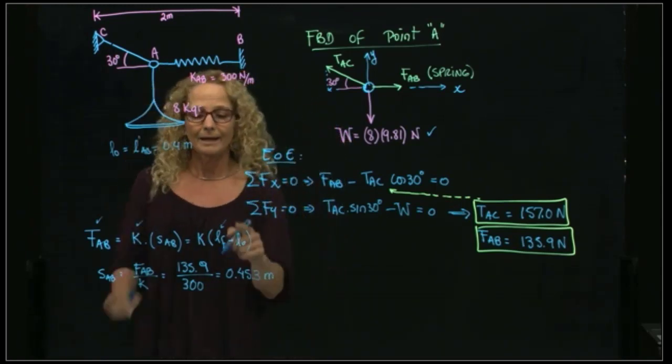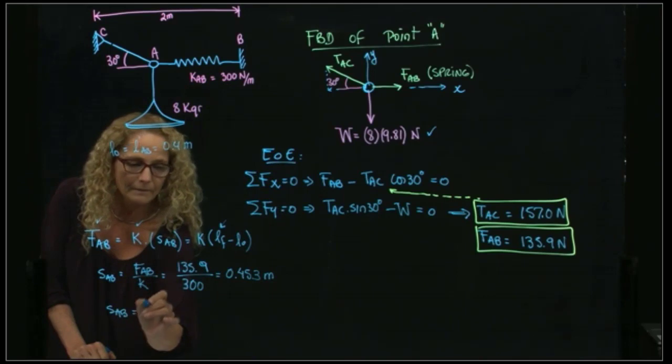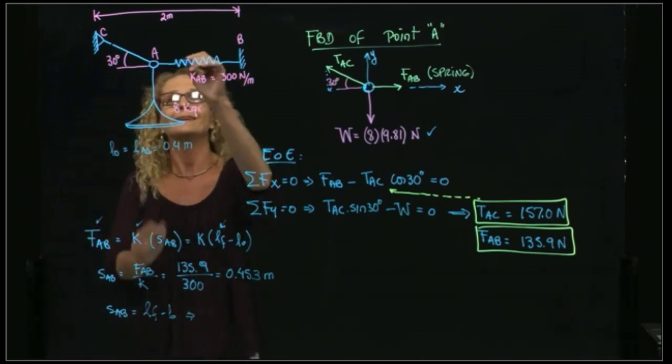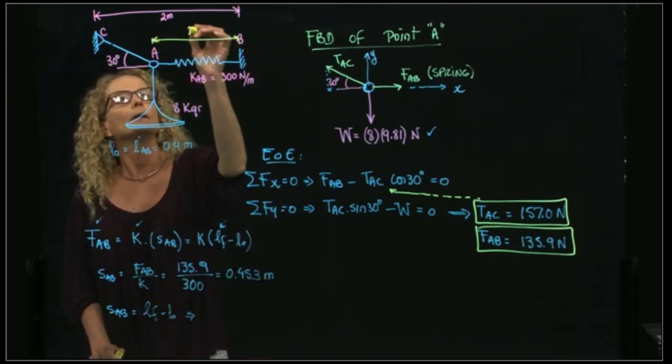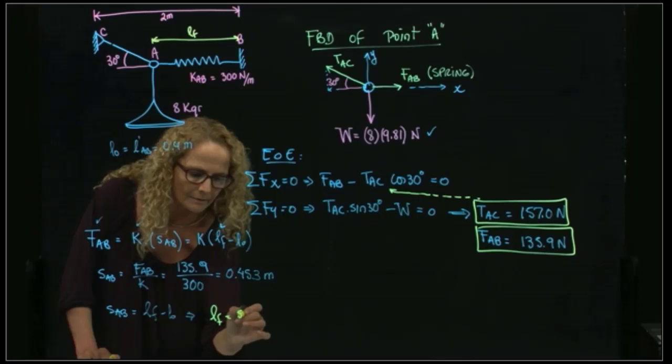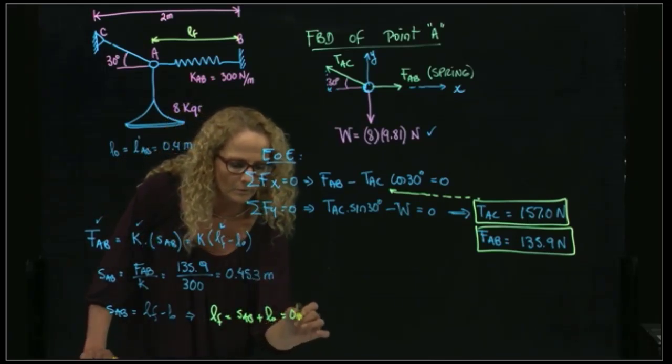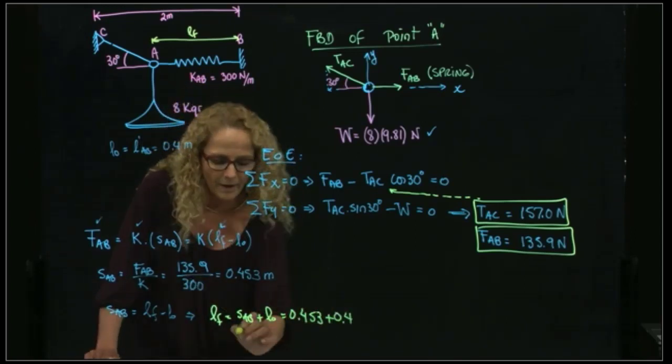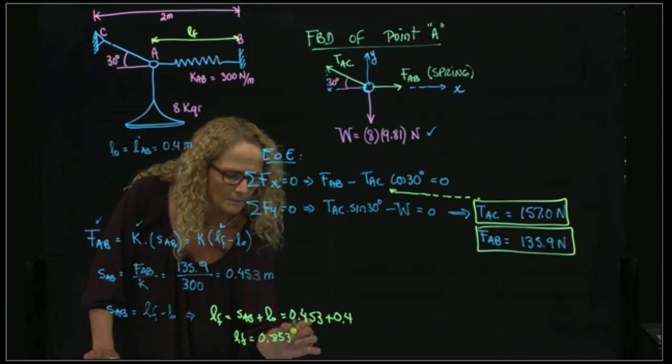So the final length is what I want to find. And I know sAB is equal to LF minus L0. So therefore, I can write that the final length of the spring will be sAB plus L0. So that's 0.453 plus 0.4. So my final length is 0.853 meters.